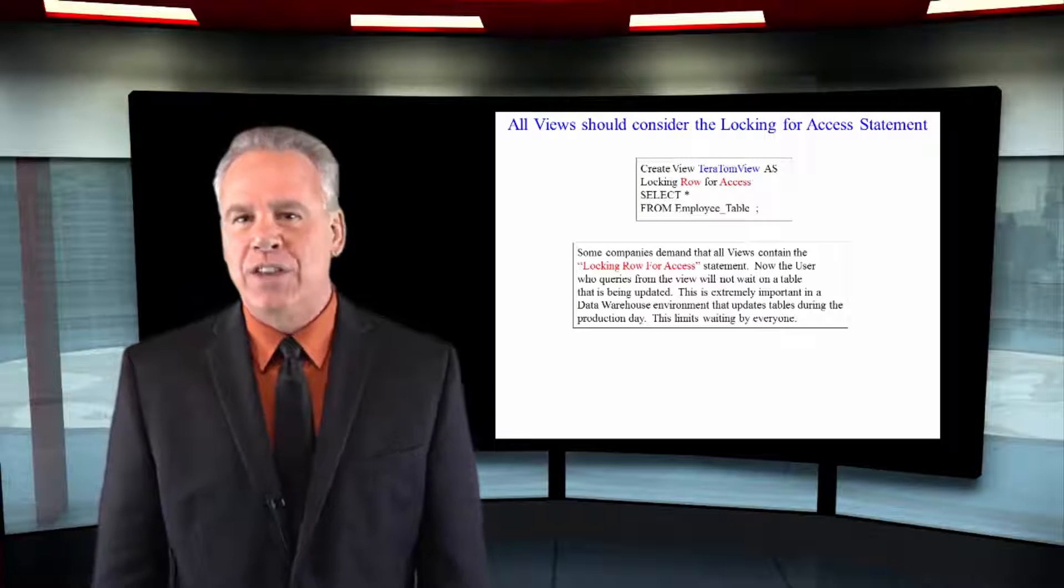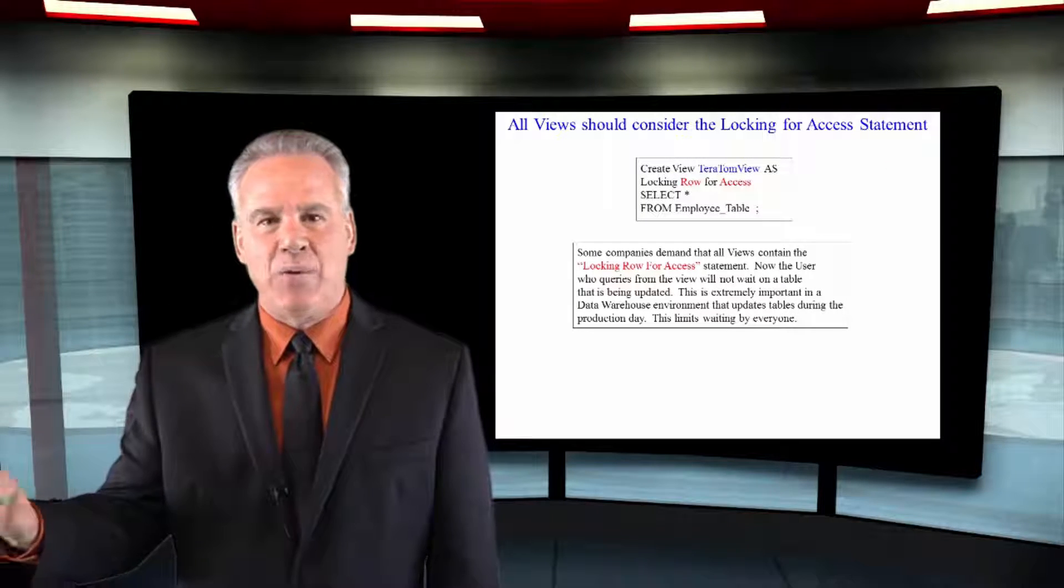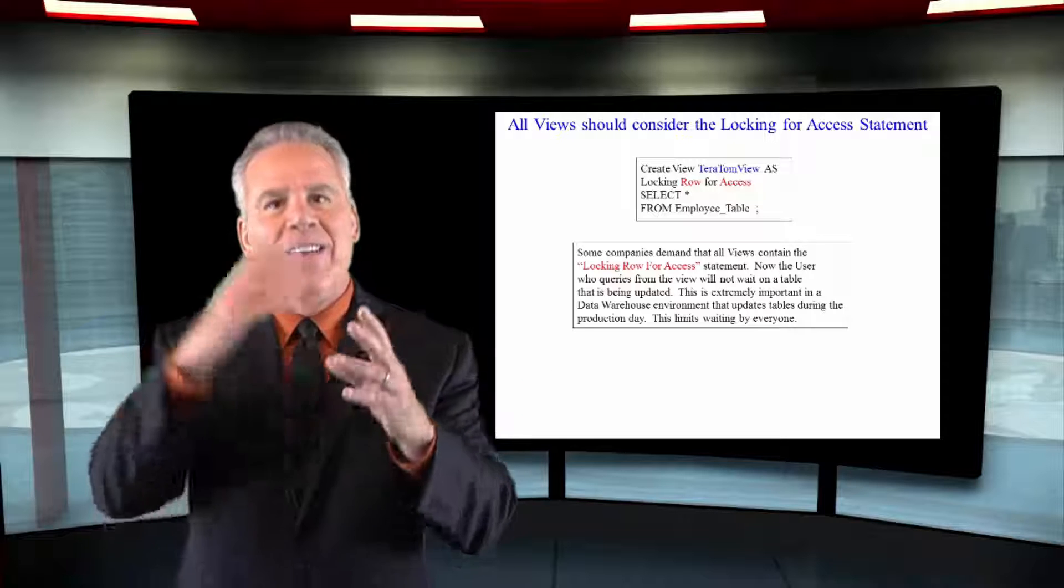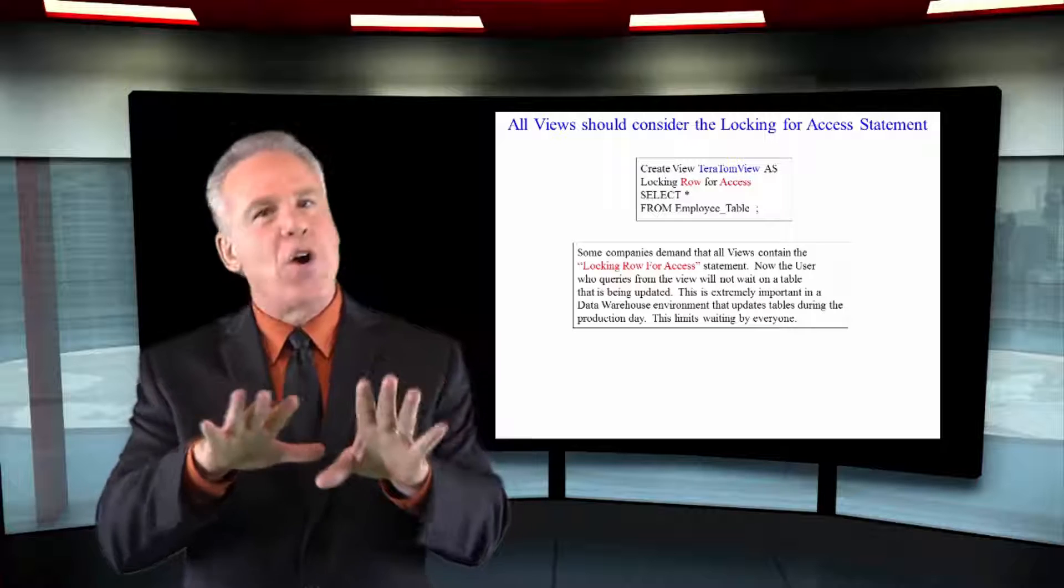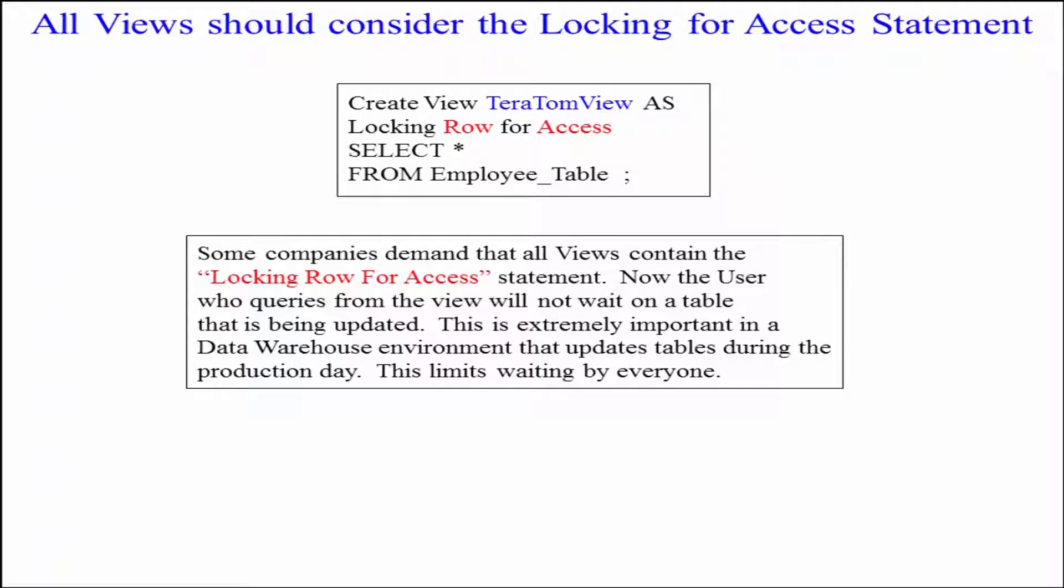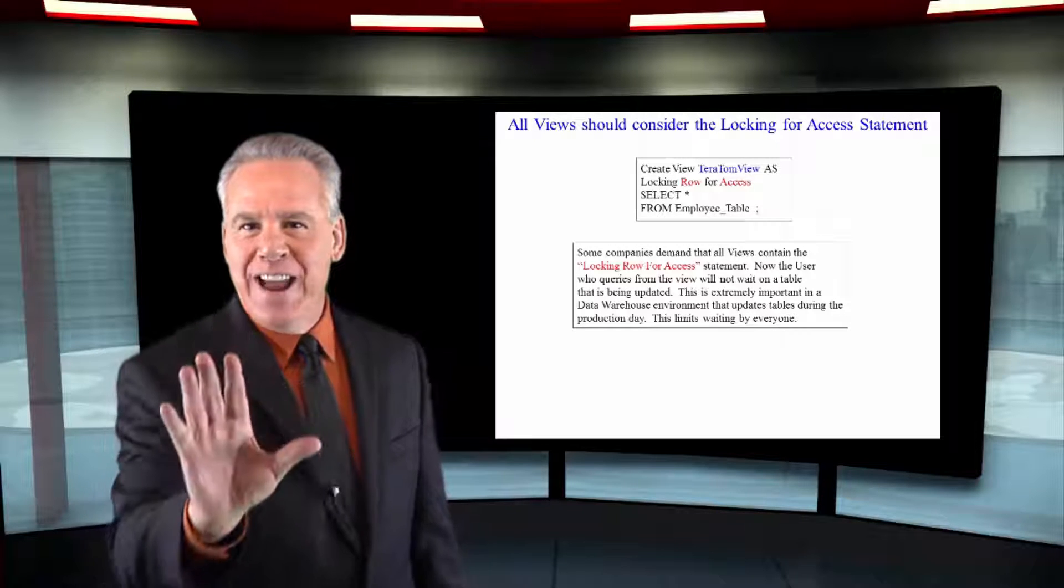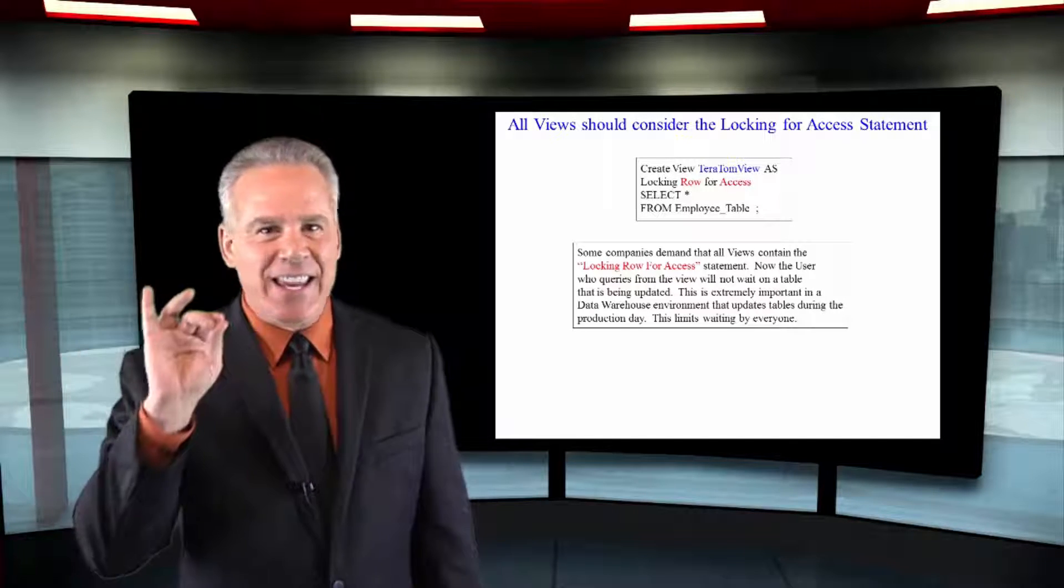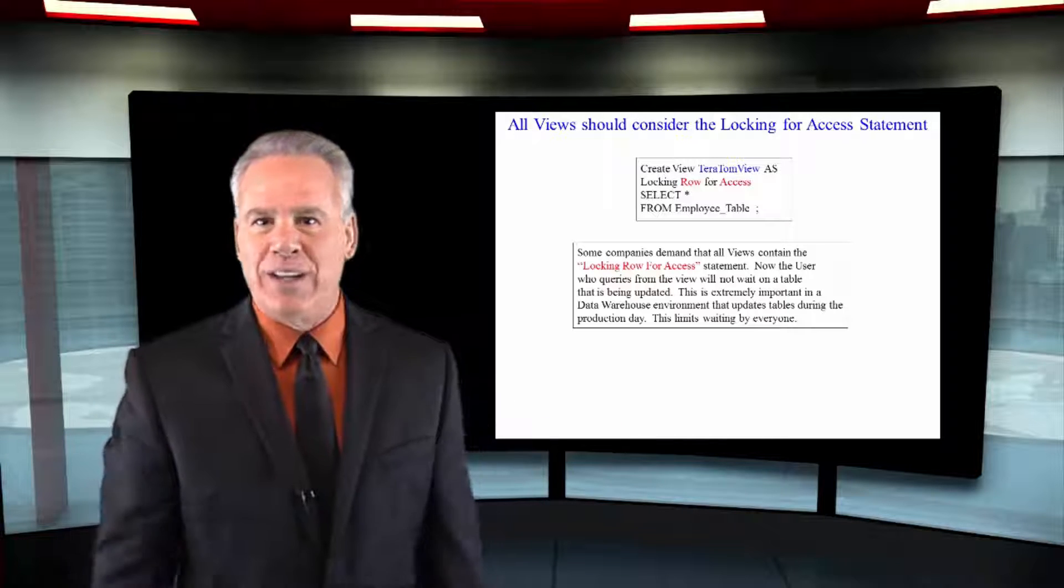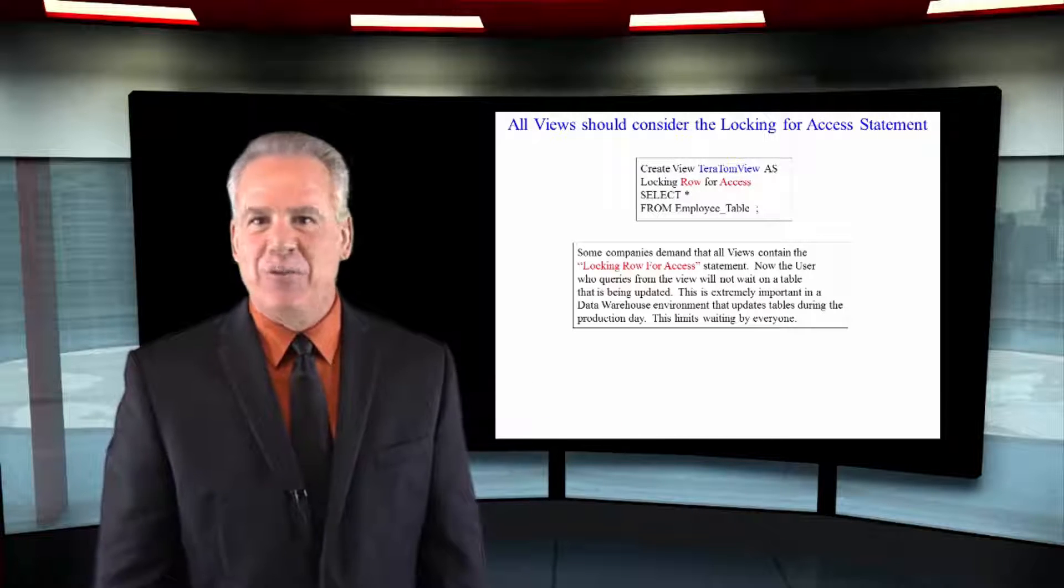People very seldom actually access the table. They usually access the view that accesses the table, so that certain columns can be secured, or even certain rows can be secured. But the biggest reason is, in almost every view, they've got this statement, locking row for access. So users behind the scenes don't even know it, but they're never waiting on any inserts, updates, or deletes. And that keeps people from not having to put their brakes on on the highway, and everything runs smoothly.